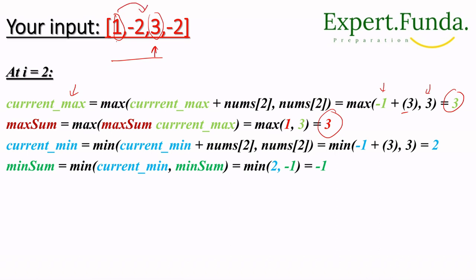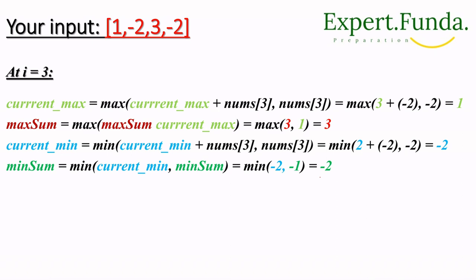Max_sum now points to 3. For current_min at i=2: previous current_min is -1, add 3: -1 + 3 = 2. min(-1, 2) ... wait, min(current_min_candidate=2, element=3) = 2. So current_min = 2. Then min_sum = min(current_min=2, previous min_sum=-1) = -1. Min_sum stays at -1.